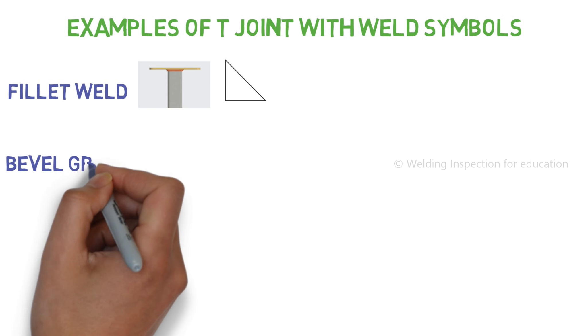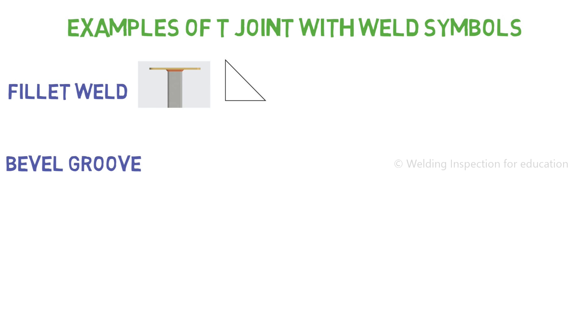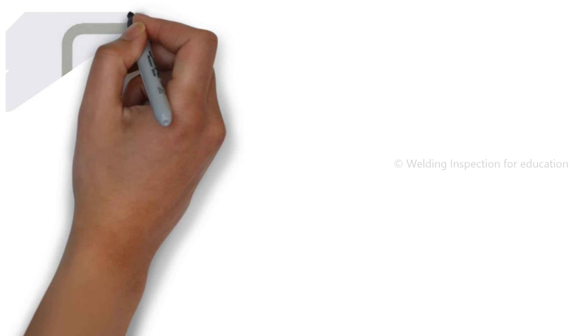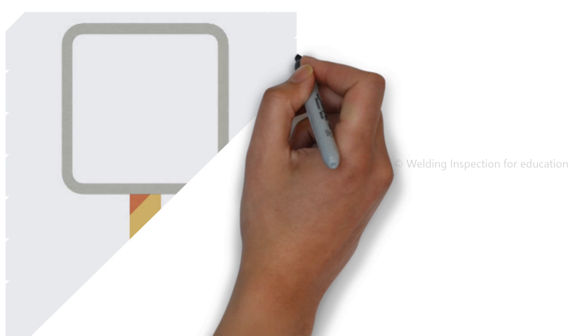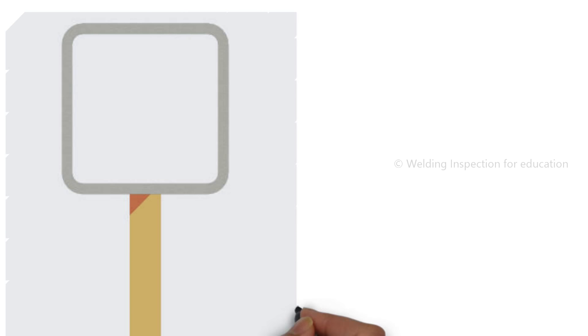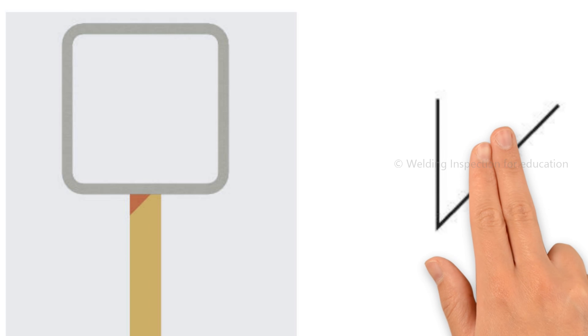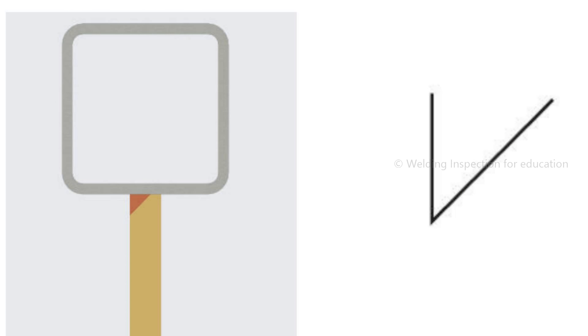Then, bevel groove T joint: a bevel groove T joint is the connection between a flat surface and a prepared chamfered surface with a 90-degree connection.